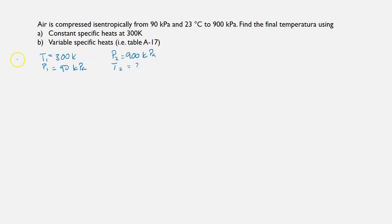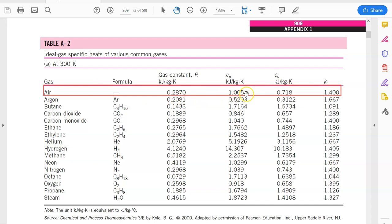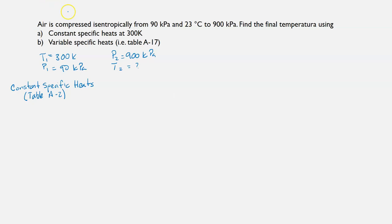So first, for constant specific heats, we go to table A-2 in our appendix and we can see that for air our k is 1.4. So we write it here.